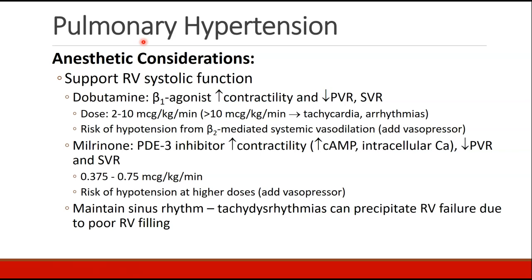An alternative is milrinone, a phosphodiesterase-3 inhibitor, which increases contractility by increasing cyclic AMP and intracellular calcium, and also decreases pulmonary and systemic vascular resistance. It is typically run at 0.375 to 0.75 mcg/kg/min. At higher doses, there is also risk of hypotension, once again necessitating a vasopressor. Additionally, maintaining sinus rhythm is very important to support right ventricular systolic function, as tachydysrhythmias can precipitate RV failure due to poor RV filling.